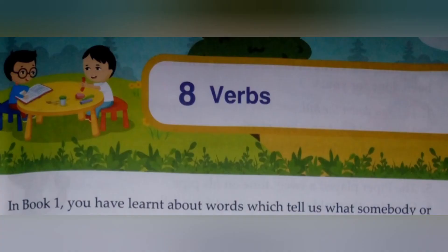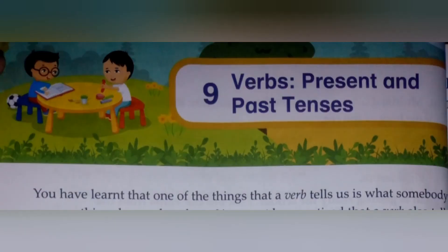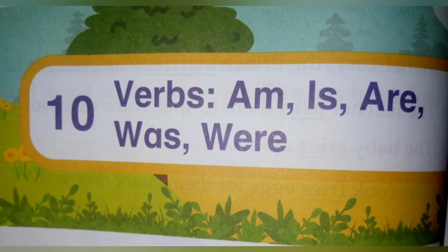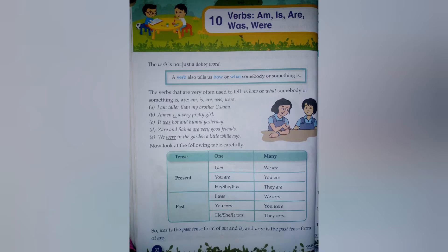After adjective there is a chapter on 'works' that I have already uploaded, and verb present and past — these are also uploaded on our YouTube channel. After that there is chapter number 10, which is about verbs: am, is, are, was, were. That is not uploaded yet, so today we are going to do this one. Let's start with the 10th chapter, part one.